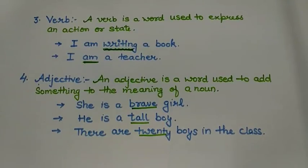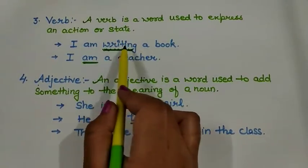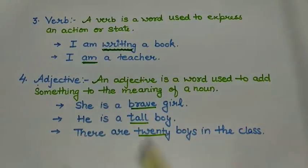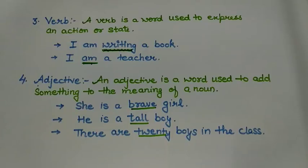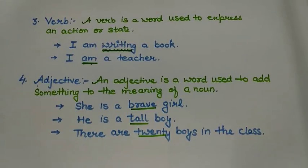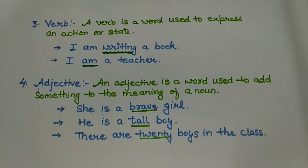Coming to the next one — verb. A verb is a word used to express an action or state. Verbs are the most important parts of speech because there can be no sentence without a verb. For example, 'I am writing a book' — writing is an action, so it is underlined. Next, 'I am a teacher' — 'am' is underlined. 'Am' is not a physical action verb but acts as a verb here; it is the present form of the verb 'be.' So there may not be a physical action but a verb is always present.